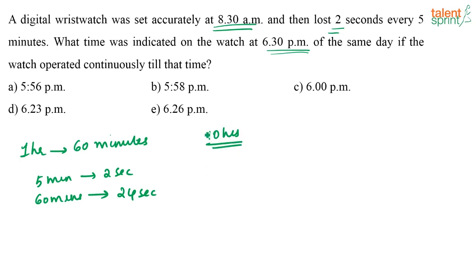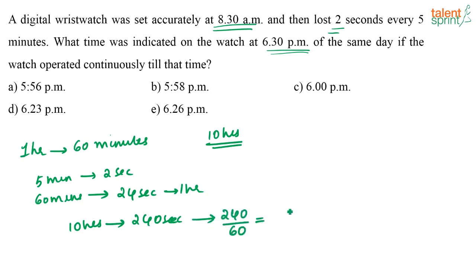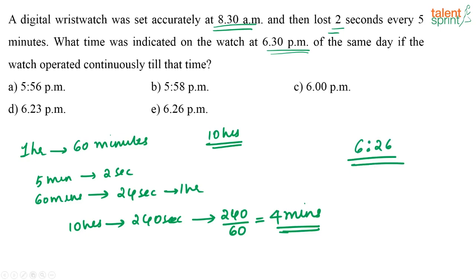In these 10 hours, how much time will the watch lose? In 60 minutes the watch is losing 24 seconds, so in 10 hours it will lose 240 seconds. 240 seconds divided by 60 equals 4 minutes. So in 10 hours the watch would have lost 4 minutes. When the actual time is 6:30 PM, the watch will show 6:26 PM. The correct answer is option E: 6:26 PM.